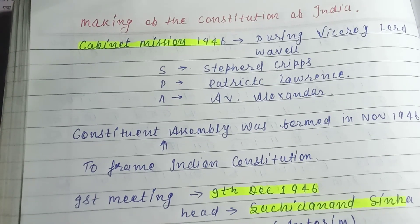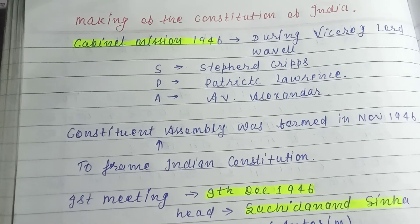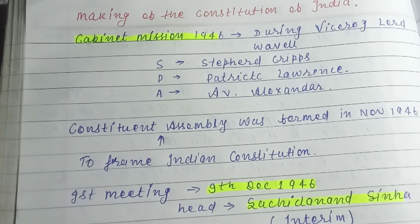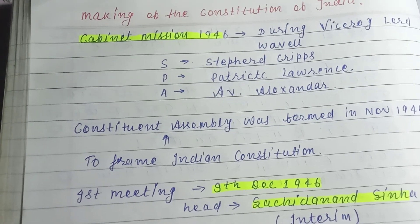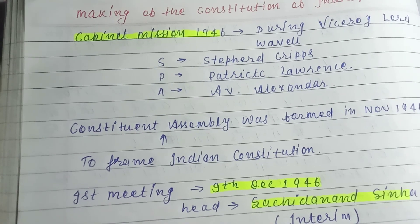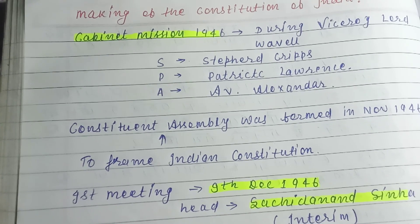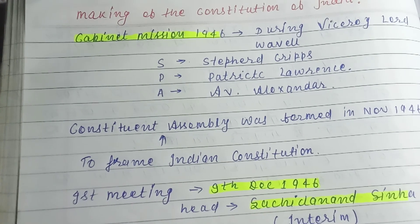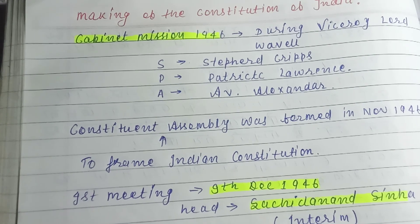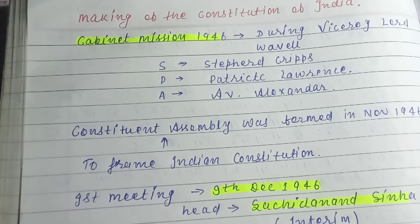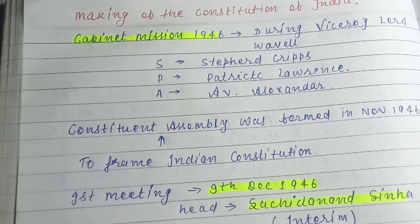Lord Wavell was the Viceroy at the time. The main members of the Cabinet Mission 1946 can be remembered by the acronym S.P.A. — S stands for Stafford Cripps, P stands for Pethick-Lawrence, and A stands for A.V. Alexander. These three people were the secretaries of the Cabinet Mission 1946 from British rule.